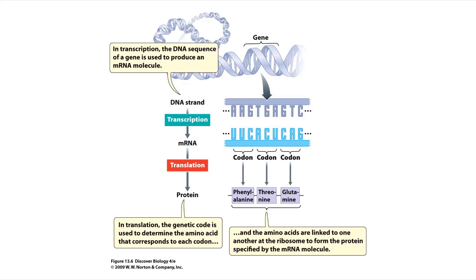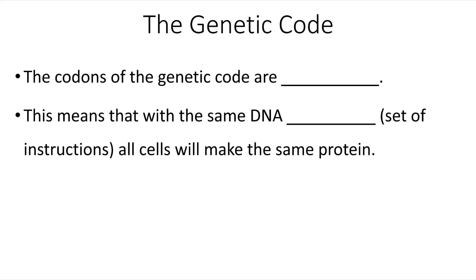Every three letters in the nucleic acid language codes for one letter in the protein language. We have our DNA template, and making a molecule of RNA from that is known as transcription. That mRNA molecule, or messenger RNA, is then able to travel to the ribosome where translation takes place, and where every group of three letters — the codon — is translated into one amino acid. This translation is based on what's called the genetic code, and what's amazing is that the genetic code is universal — true for all life as we know it, whether bacteria, plants, animals, fungi, or humans.